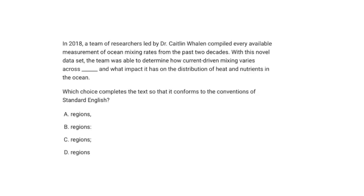This is a super common SAT English question dealing with grammar, very likely to show up on your exam. The passage says a team compiled ocean mixing rate measurements, and with this novel data set the team was able to determine how current-driven mixing varies across the blank and what impact it has had on the distribution of heat and nutrients in the ocean. The question asks which choice conforms to standard English conventions. The first answer I'll cross off is B — we do not use a colon here.